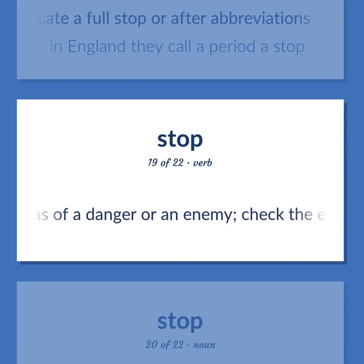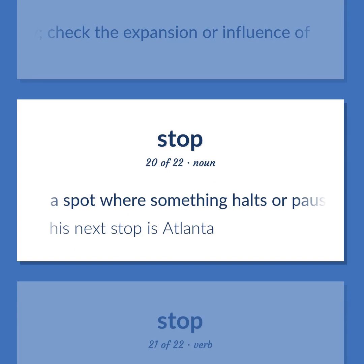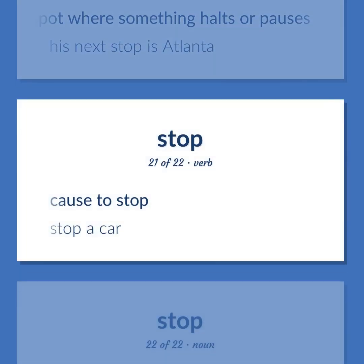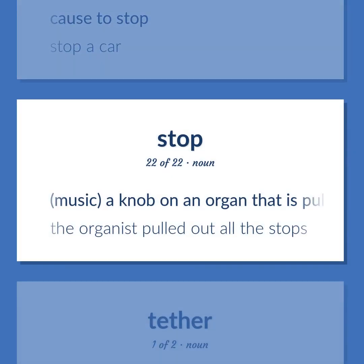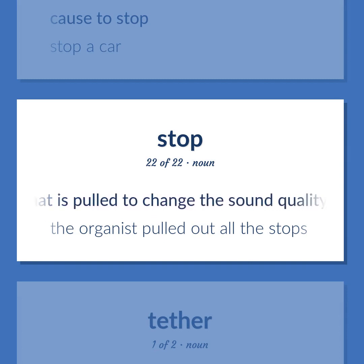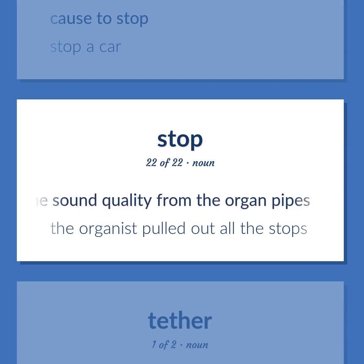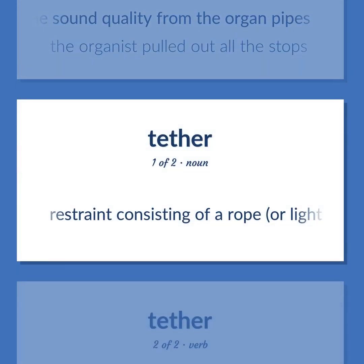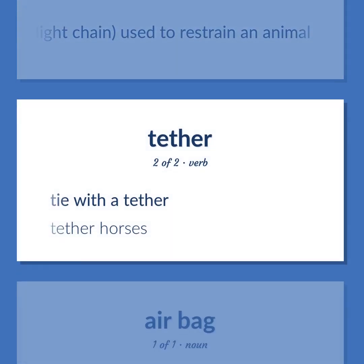Stop: Hold back, as of a danger or an enemy; check the expansion or influence of. A spot where something halts or pauses — his next stop is Atlanta. Cause to stop — stop a car. Music — a knob on an organ that is pulled to change the sound quality from the organ pipes; the organist pulled out all the stops. Tether: Restraint consisting of a rope, or light chain, used to restrain an animal. Tie with a tether — tether horses.